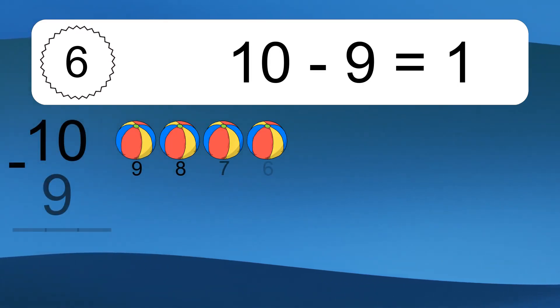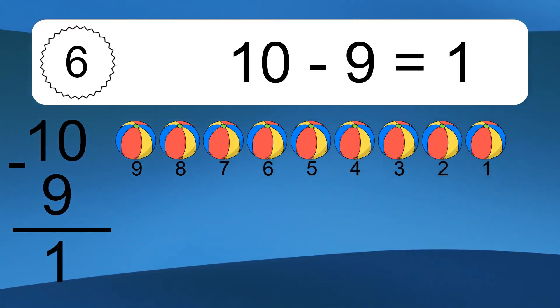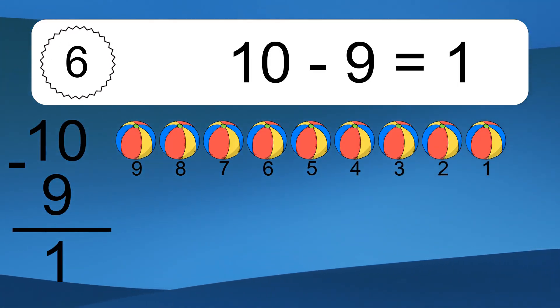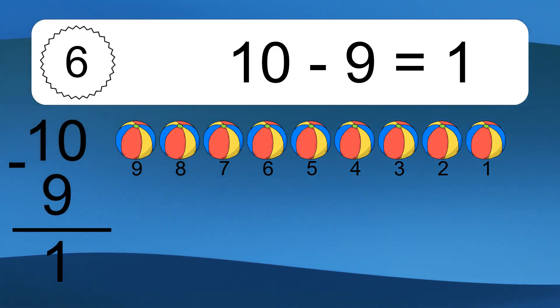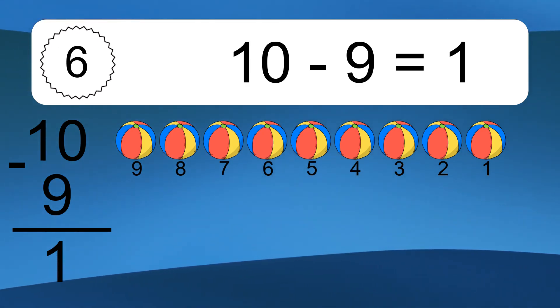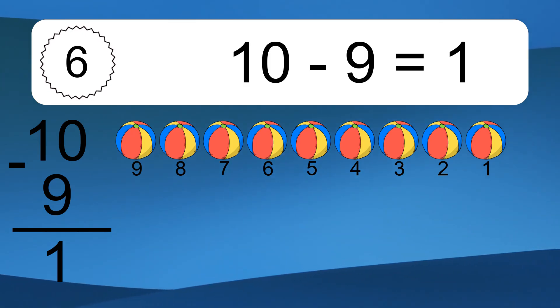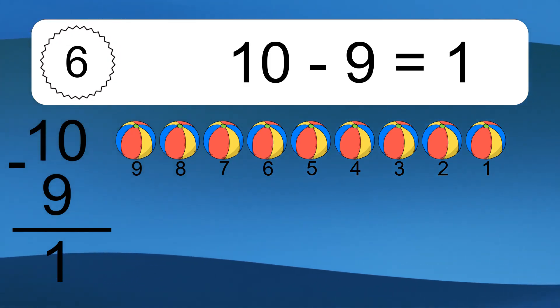10 minus 9 equals what? 10 minus 9 equals 1. Let's count it: 9, 8, 7, 6, 5, 4, 3, 2, 1.